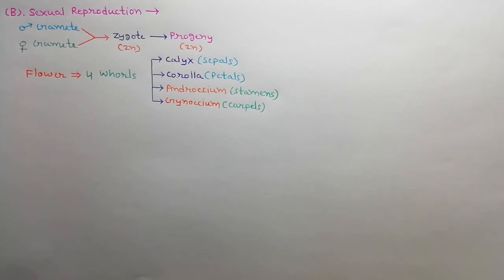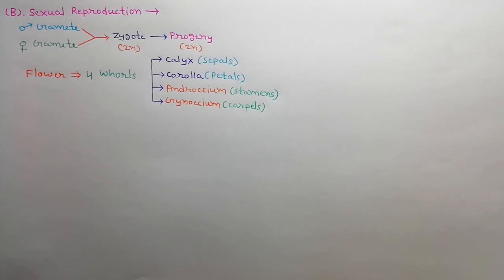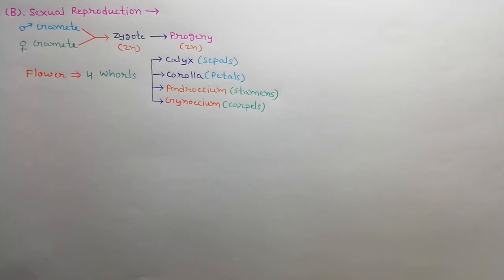A typical flower has four whorls. The outermost whorl is called calyx and its each unit is called sepal. The second whorl is called corolla and its each unit is called petal. The third whorl is called androecium and its each unit is called stamen, which is the male part of the plant. The innermost whorl is called gynoecium, which is the female part, and its each unit is called carpel.